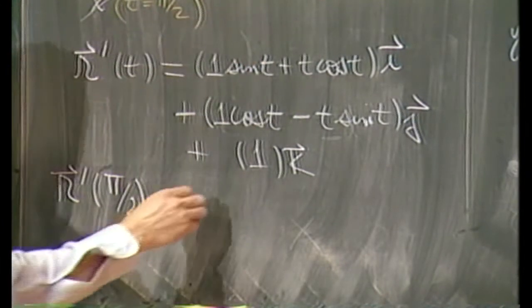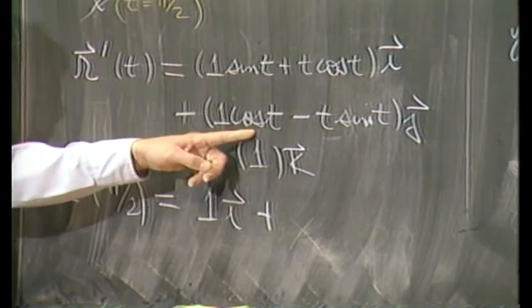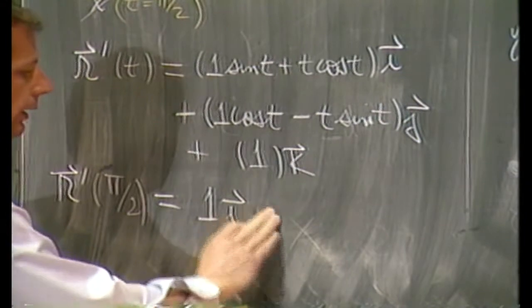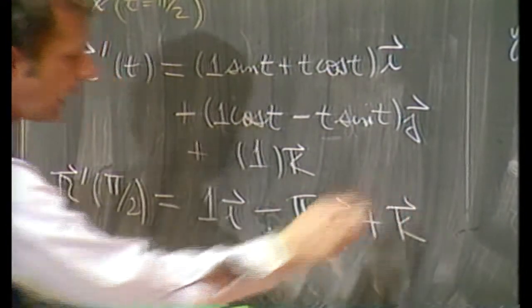So we'll get just 1 out of that thing. 1i. How about for the j component? The cosine is 0. The sine is 1. Looks like a minus π/2 j and just a plain k. We'll always have a k there.